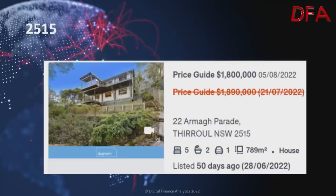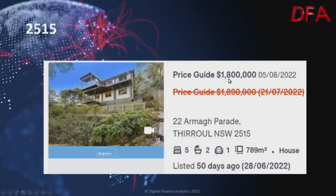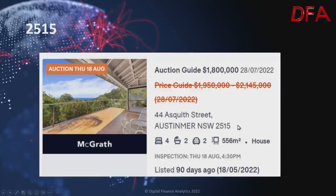Now postcode 2515, Thirroul. A five-bedroom, two-bathroom house on 789 squares, listed 50 days ago on the 28th of June — guided at $1.89 million on the 21st of July, now on the market at $1.8 million on the 5th of August. Another in the same postcode at Austinmer: four bedrooms, two bathrooms on 556 square metres, listed 90 days ago — was $1.95 to $2.145 million on the 28th of July, now the auction guide is $1.8 million.